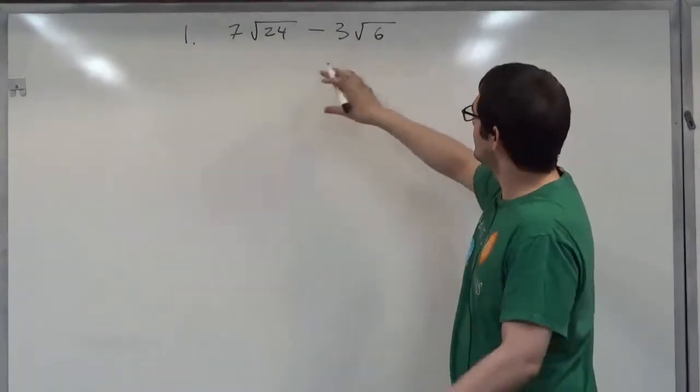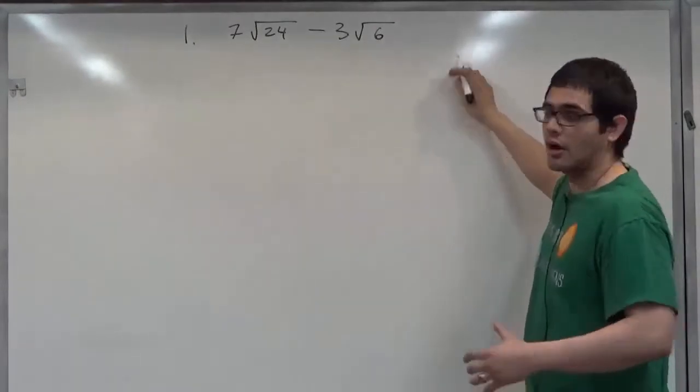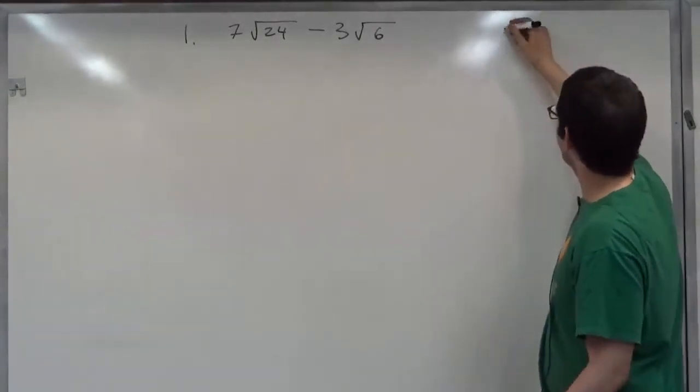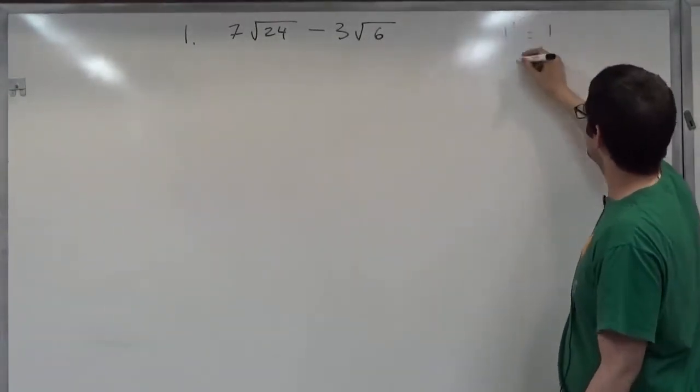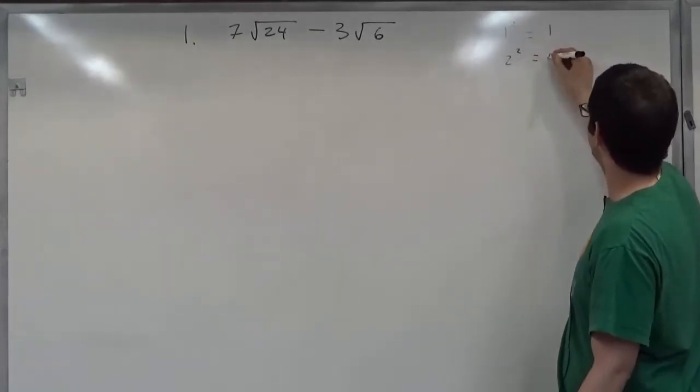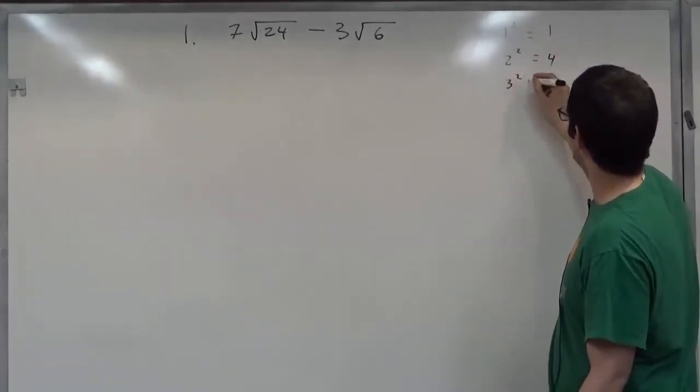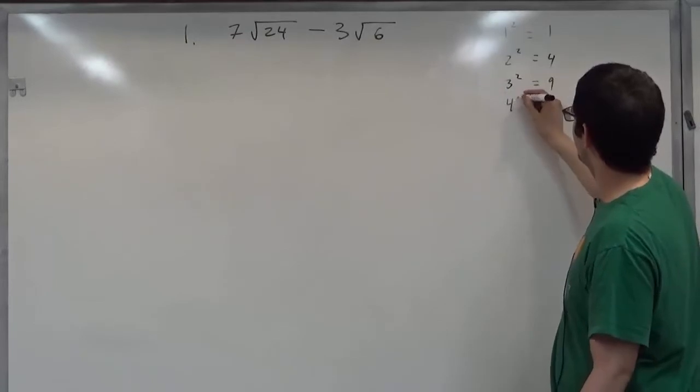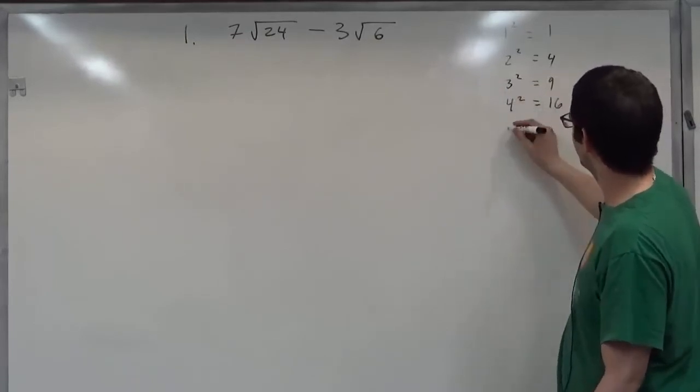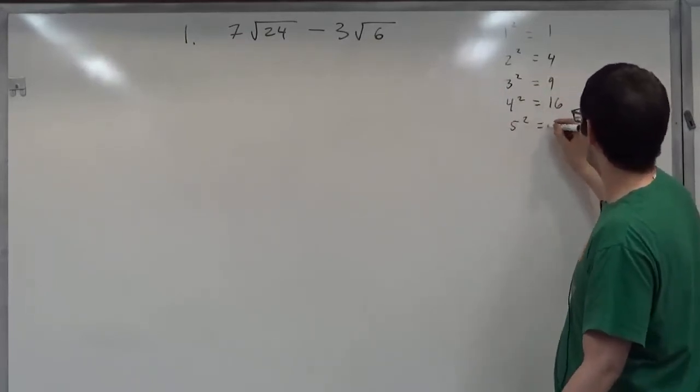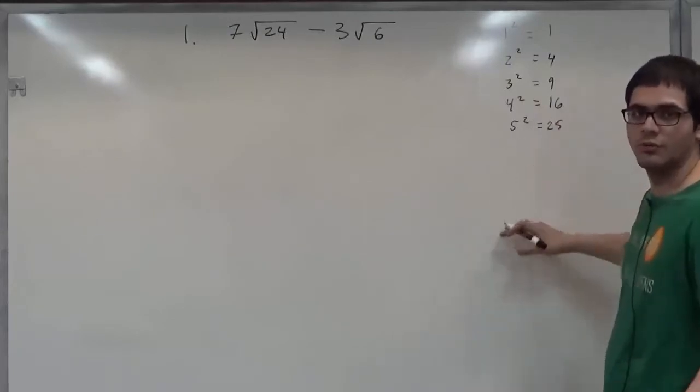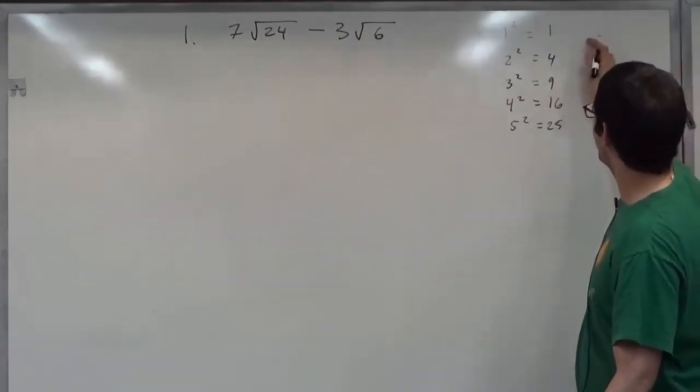A good thing to know before we start is our perfect squares. We have one squared is one, two squared is four, three squared is nine, four squared is sixteen, five squared is twenty-five. We can go on and so forth, but I think this will work for this problem.